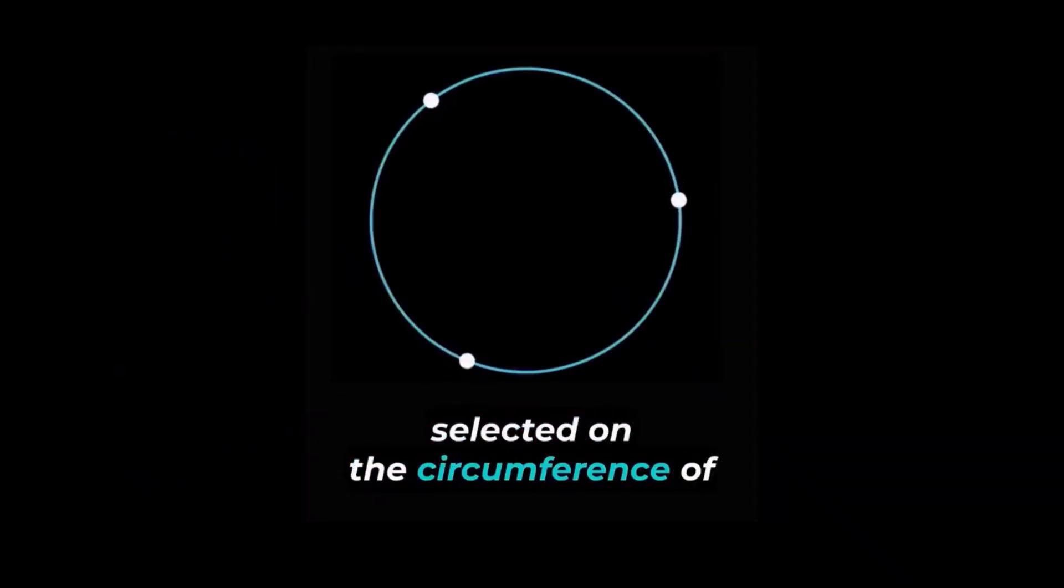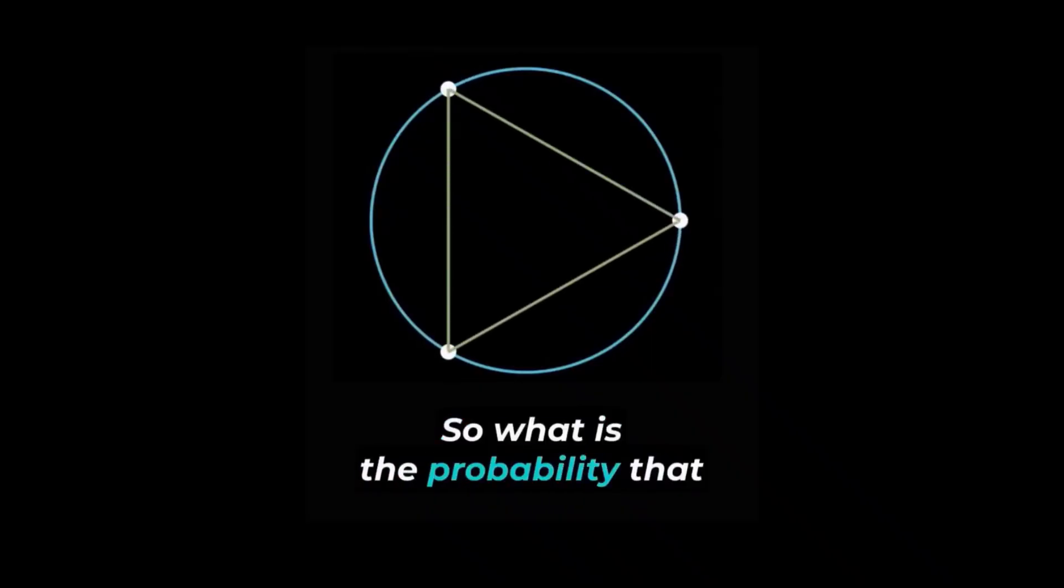Three points are randomly selected on the circumference of a circle and then joined to form a triangle. So, what is the probability that the resulting triangle is an acute triangle? Pause the video here if you want to give it a try.